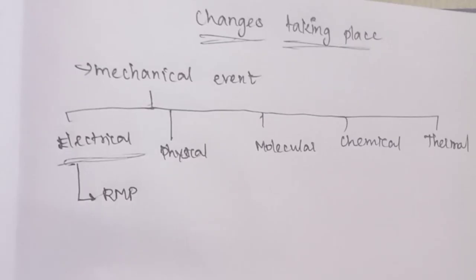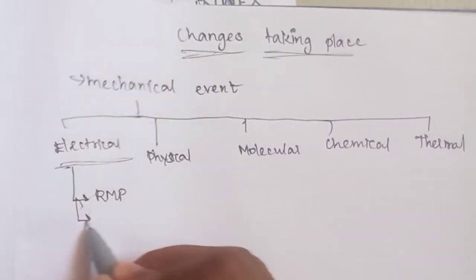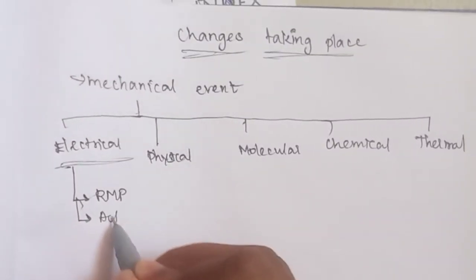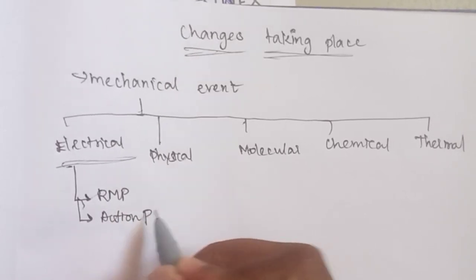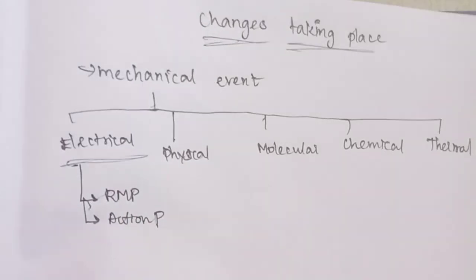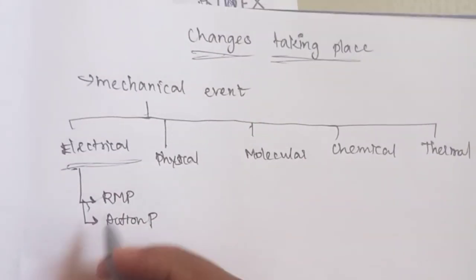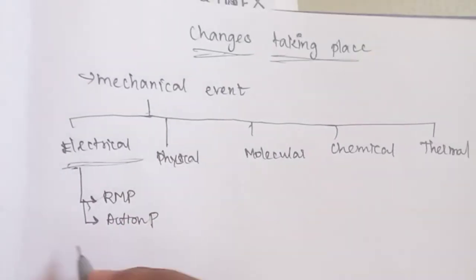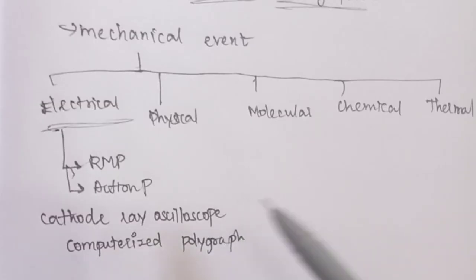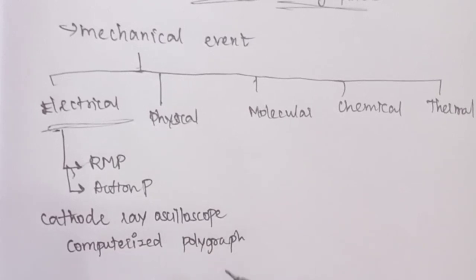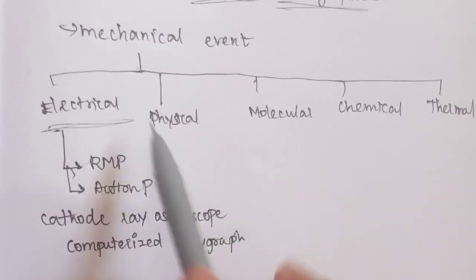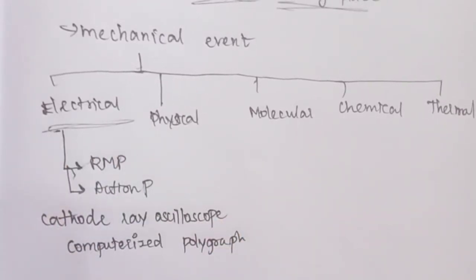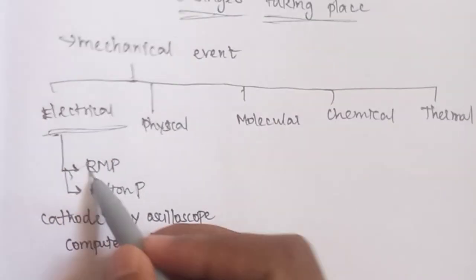If the muscle stimulation occurs, the muscle sticks in the living. Its the muscle with the electrical potential. Even the cathode ray oscilloscope and computerized polygraph are used. In this video, we will talk about the electrical potential. Let's look at the resting membrane potential.